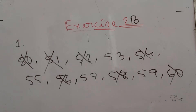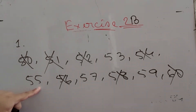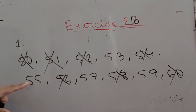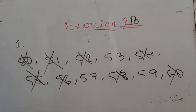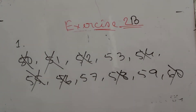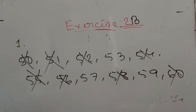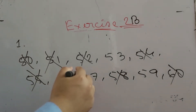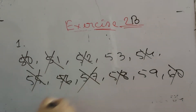Look at 55. The units digit of 55 is 5, which means 55 can be divisible by 5, so it is not a prime number. Now look at 57. 5 plus 7 equals 12. Since 12 can be divisible by 3, 57 can also be divisible by 3, so 57 is also not a prime number.